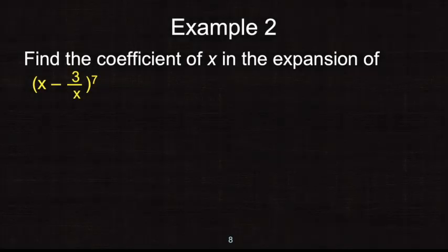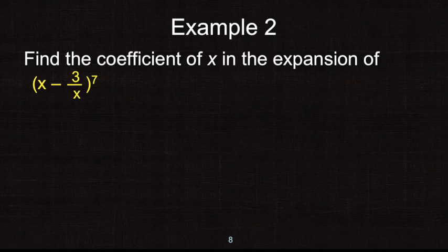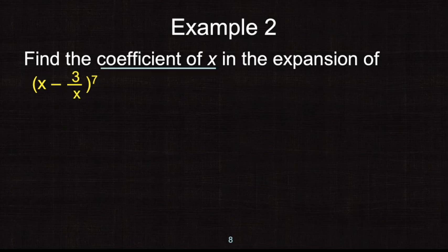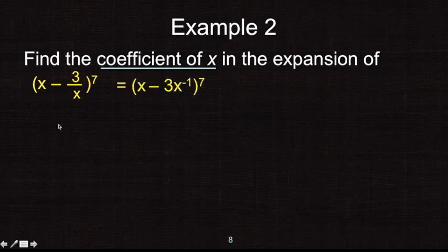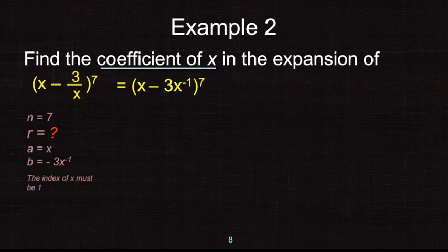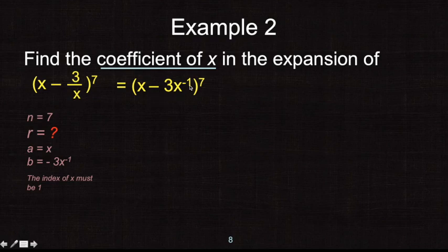What if we have two x's in the binomial — where the first term contains an x and the second term also contains an x, especially if x is also in the denominator? For example, find the coefficient of x. We cannot simply raise the first term to get x, because we also have x in the second term. The information: n equals 7, a equals x (first term), and b equals negative 3 over x, which we rewrite as negative 3x to the power of negative 1.